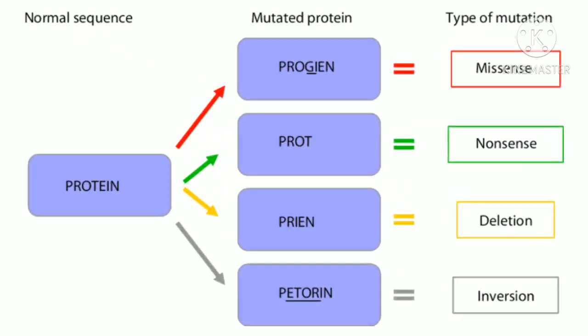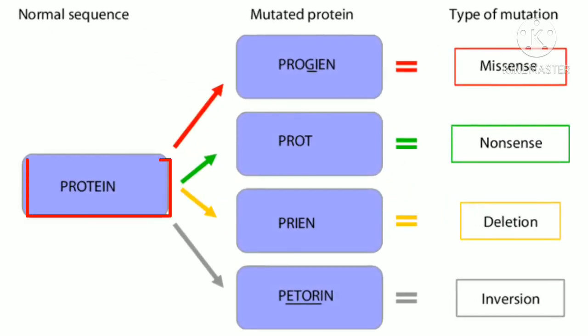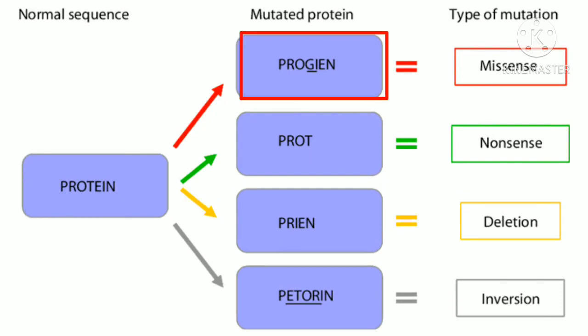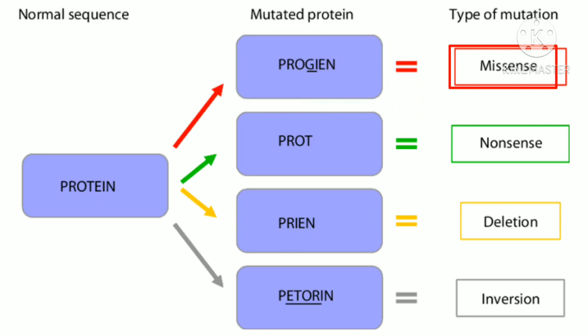Assume that the word 'protein' represents a nucleotide sequence. When the word 'protein' is changed to 'progein' due to the letter T being changed to G, this type of mutation is a missense mutation.